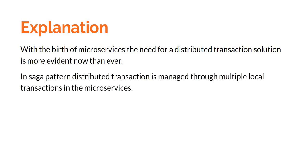In the Saga pattern, distributed transaction is managed through multiple local transactions in the microservices. Each microservice will be responsible for its own transaction. But the question is, if each microservice is managing its own transaction, how do we manage distributed transaction? The solution is basically keeping track of all the transactions in each of the microservices, and then based on the requirement, figuring out whether if one of the transactions fails, what action should be taken.